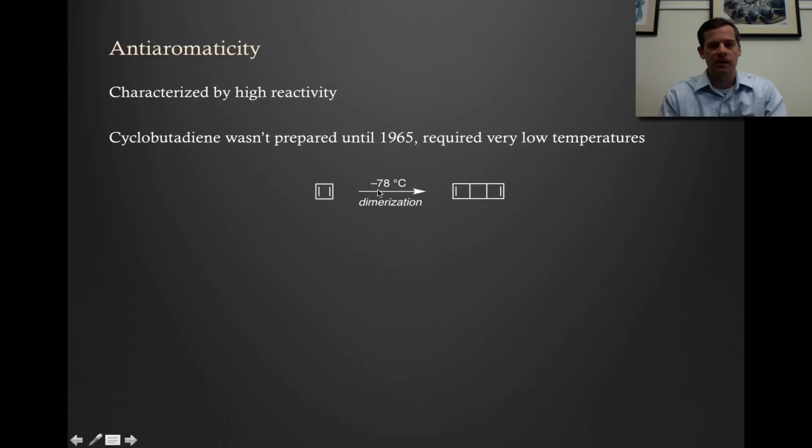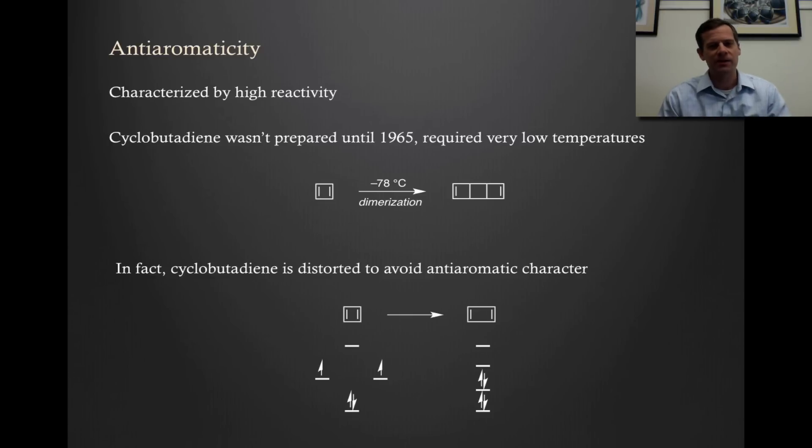If you warm it up even a bit, even to the point of minus 78 degrees, so carbon dioxide is solid at this temperature, cyclobutadiene will very quickly dimerize. It does not want to exist because it's antiaromatic. In fact, it isn't even antiaromatic.